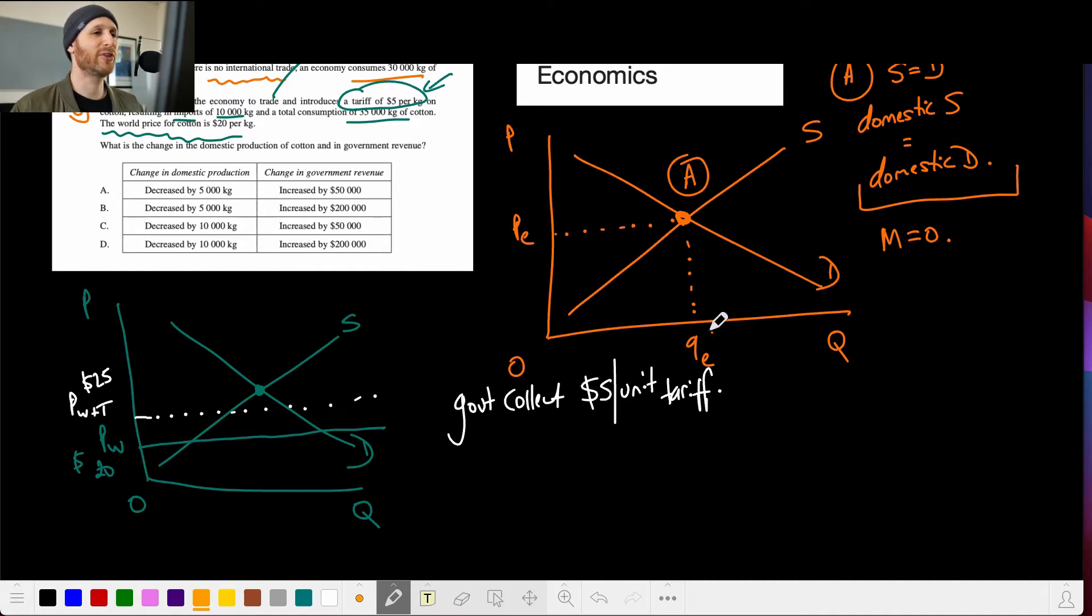Something that I didn't do over here is that I know that the equilibrium quantity is 30,000 kilos. So that quantity is in kilos. Okay, so the government collects that $5 per unit for the tariff.